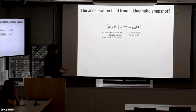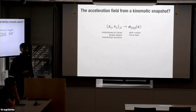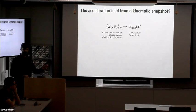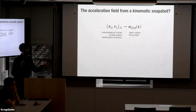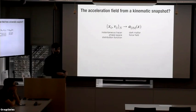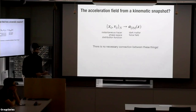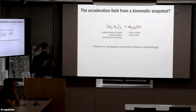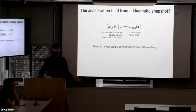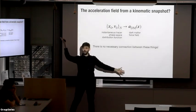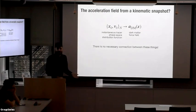The challenge is that at best what we have is the instantaneous tracer phase-space distribution function — a fancy way of saying we have positions and velocities of stars today and today only. We just have a kinematic snapshot of the Milky Way. There's actually no necessary connection between these two things. We could just be observing the Milky Way in a really special time when all of the stars happen to be configured in the state they're in now.